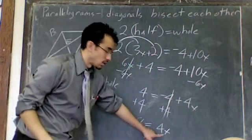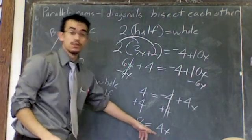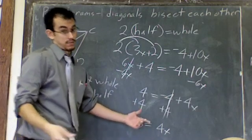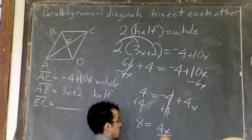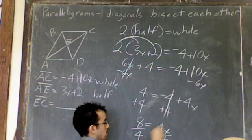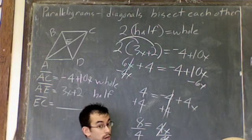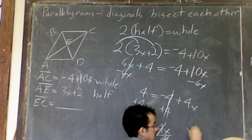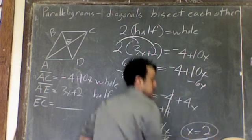Almost done. Last step. If you want X alone and this says 4 times X, you do the opposite. Instead of multiplying, we divide. Divide by 4. Divide by 4. The 4s will cancel. And 8 divided by 4 is 2. So in this case, X equals 2.